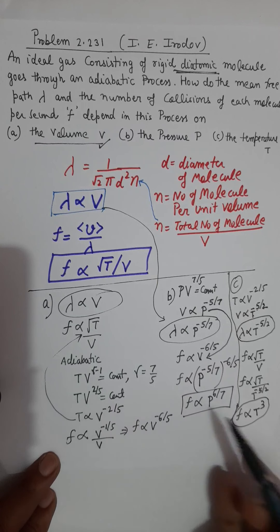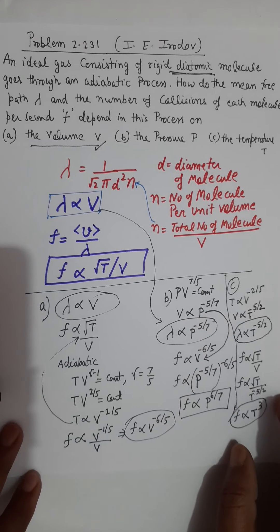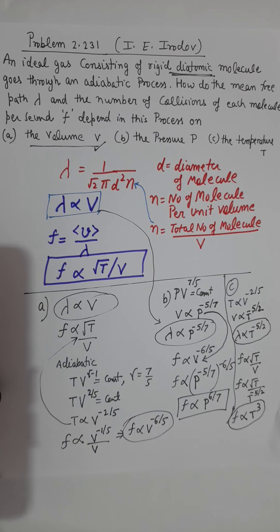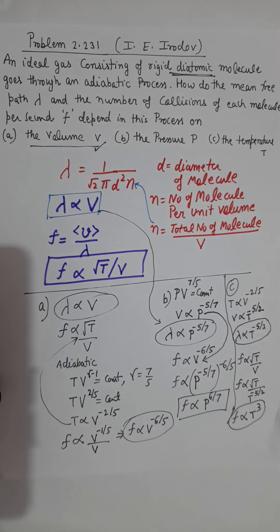So these are the answers for parts A, B, and C. It was a very straightforward simple question, specifically for JEE Main. I will come with more problems based on collision frequency and mean free path in my next videos. Till then, remember these relations: the expression for mean free path, the expression for collision frequency, and how they depend on thermodynamic parameters like pressure, volume, and temperature in various thermodynamic processes. Take care, stay at home, and we will meet again in a new video with a new problem and a new concept.